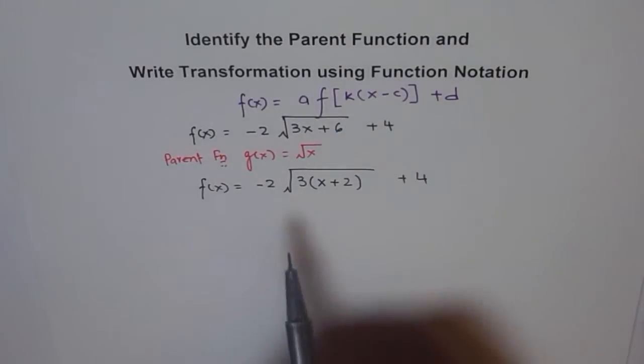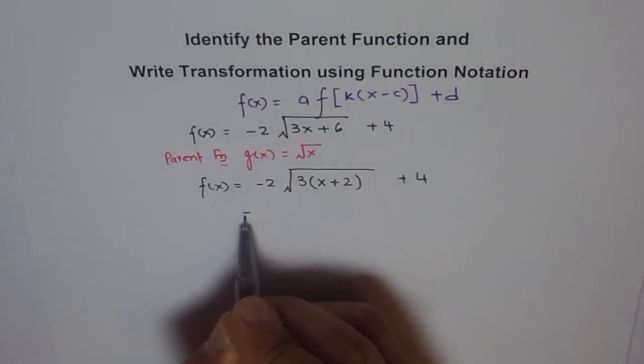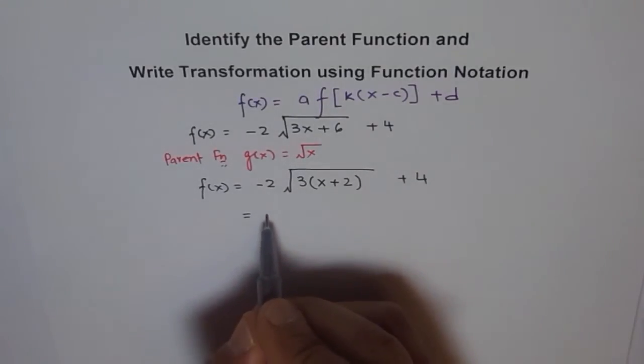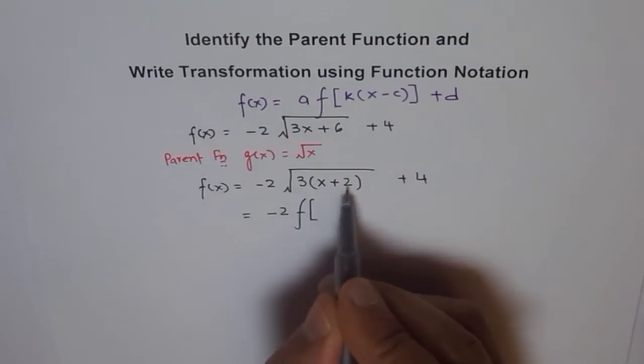Now if you compare these two, and instead of parent function square root x we just write letter f, we get our answer. So we could write this in function notation as minus 2, right, and then our function. And we are not writing square root - that bracket and anything in between is giving us this function. Do you understand? And what is k for us?